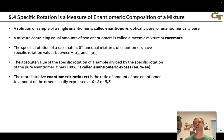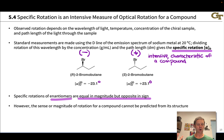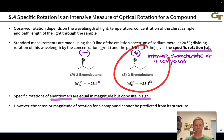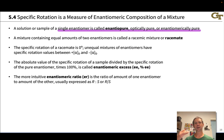Optical rotation provides us a means to measure the enantiomeric composition of a mixture. A sample of a single enantiomer is called enantiopure, optically pure, or enantiomerically pure, and it has the maximum magnitude of optical rotation observable for that compound. For a pure sample of R-2-bromobutane, the specific rotation observed is −23.1°, and the pure enantiomers provide the limits of observed optical rotation when thinking about mixtures.